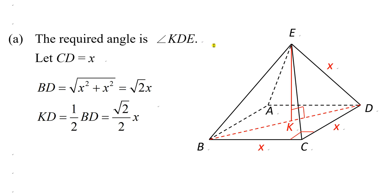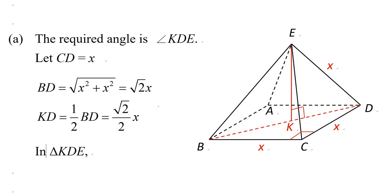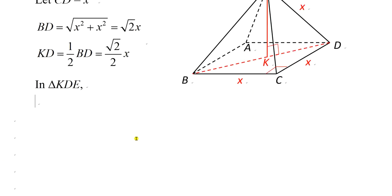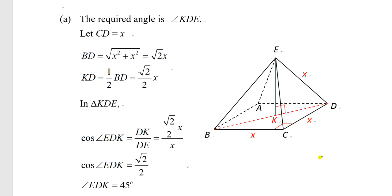The length of BD would be √(x² + x²) = √2 · x. Therefore KD = (√2/2) · x, which is half of BD. Now using triangle KDE, we apply cosine to find angle EDK: cos(angle EDK) = KD / DE = (√2/2 · x) / x. The x cancels, giving cos(angle EDK) = √2/2, so angle EDK = 45 degrees.